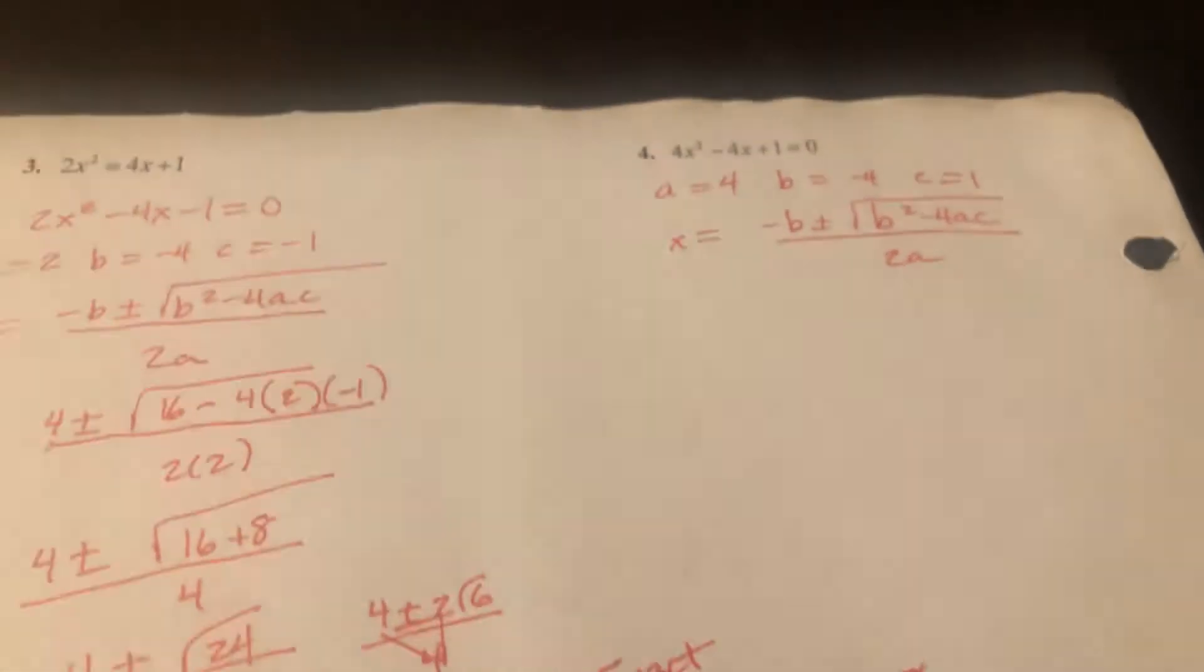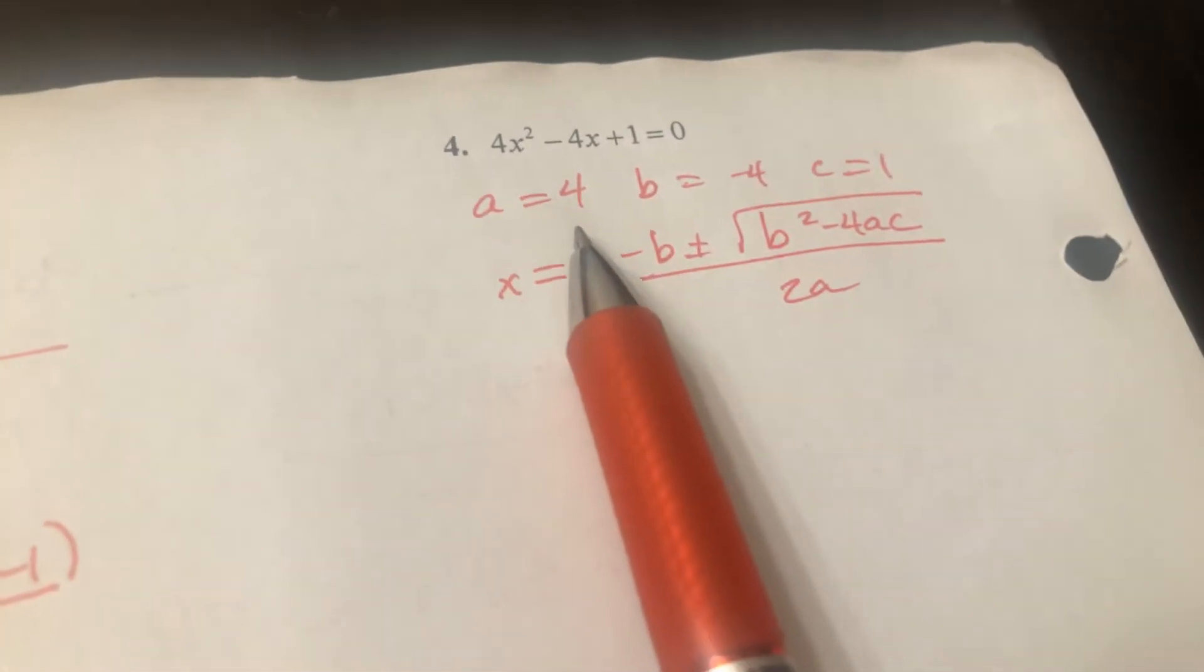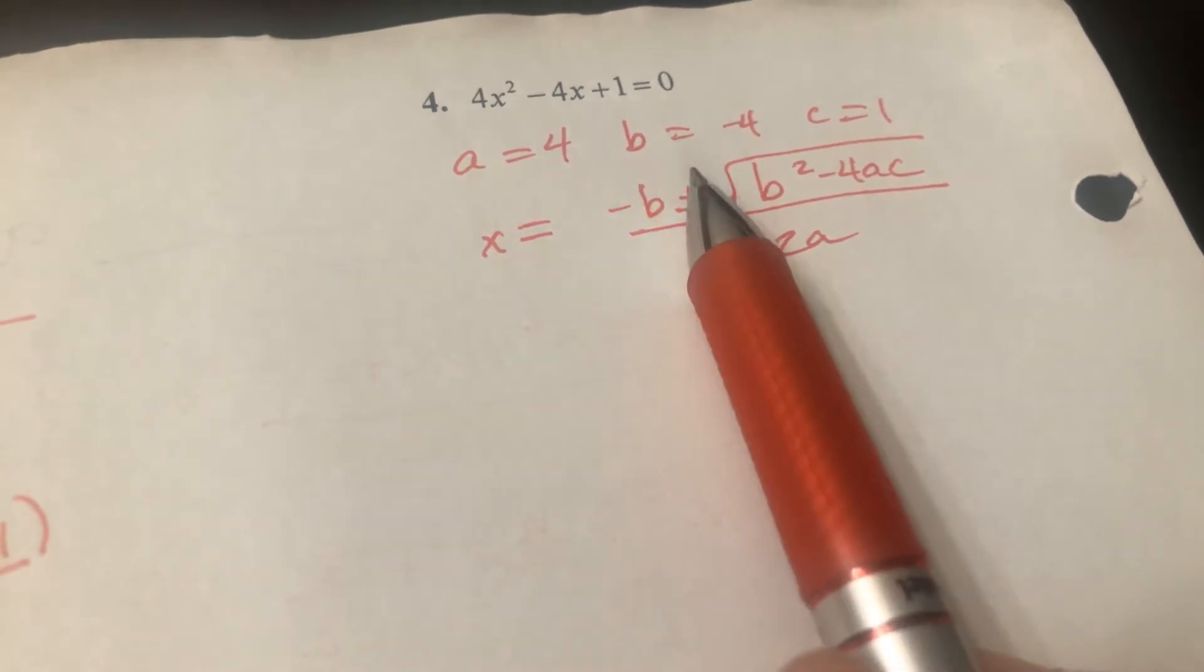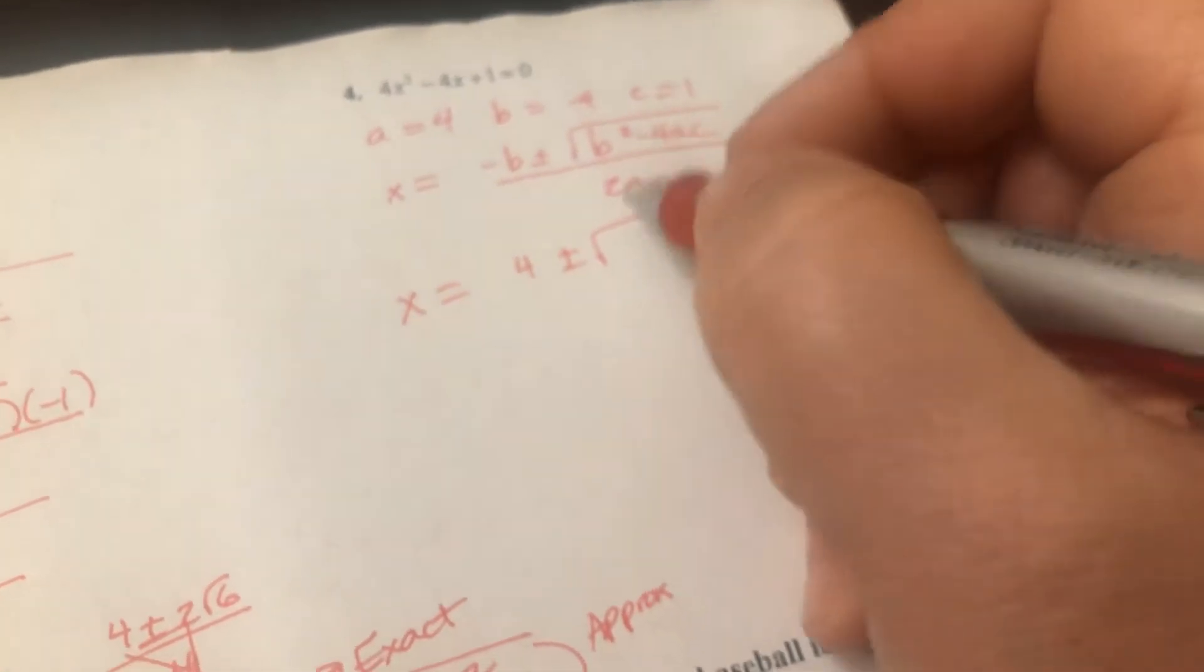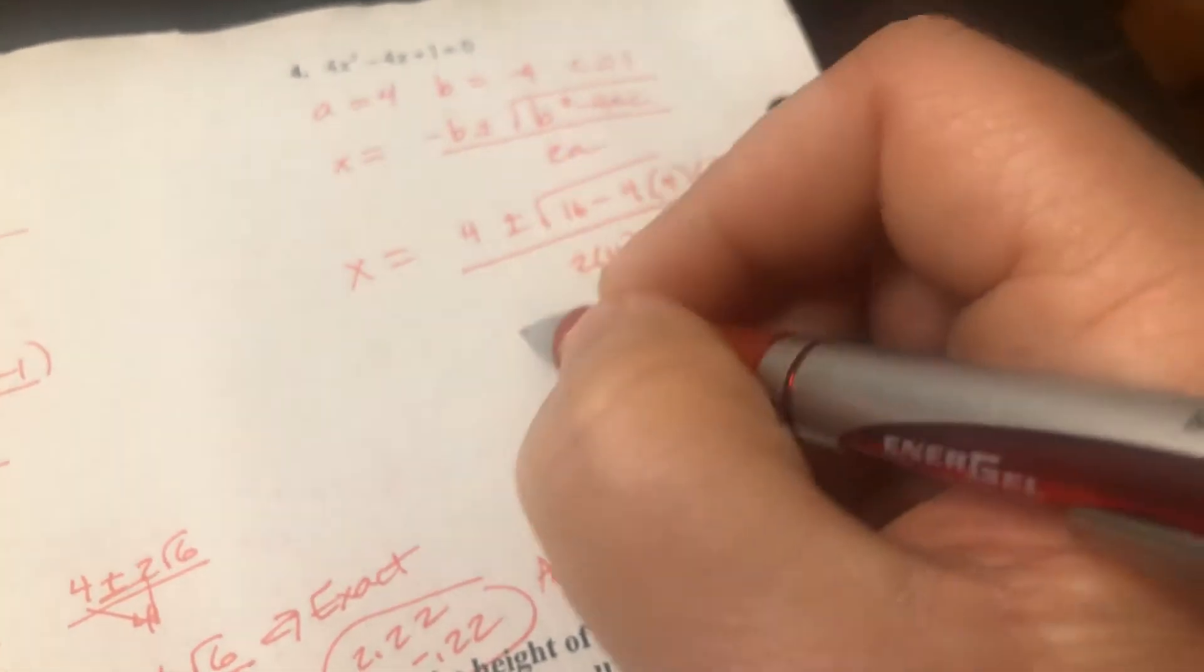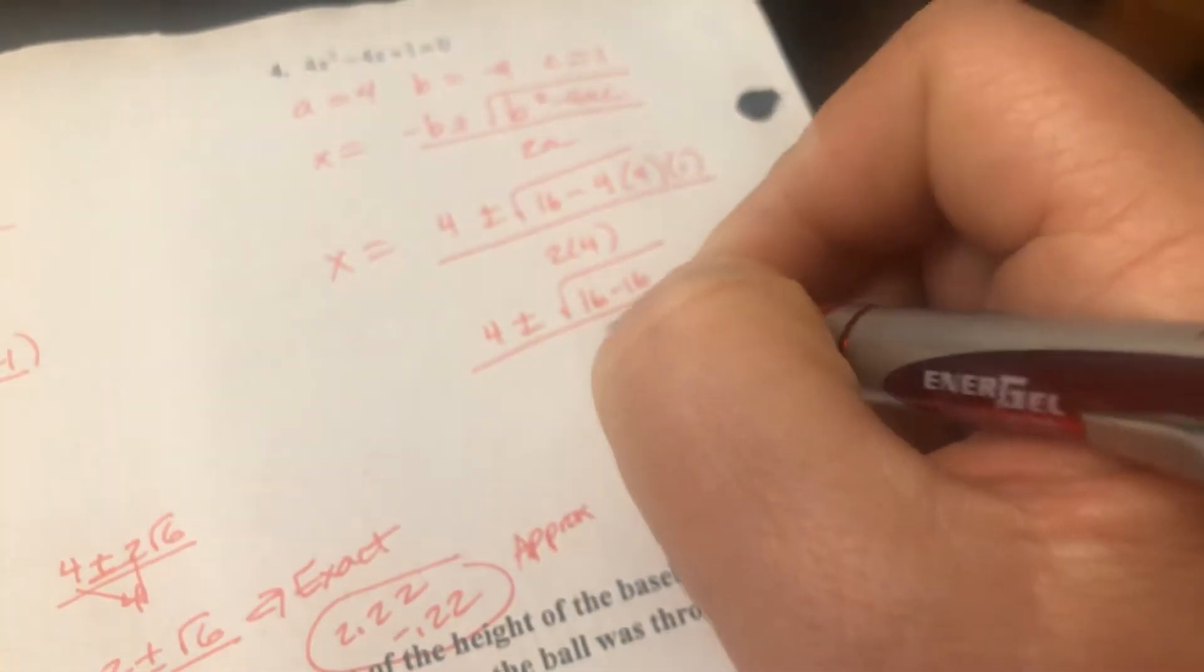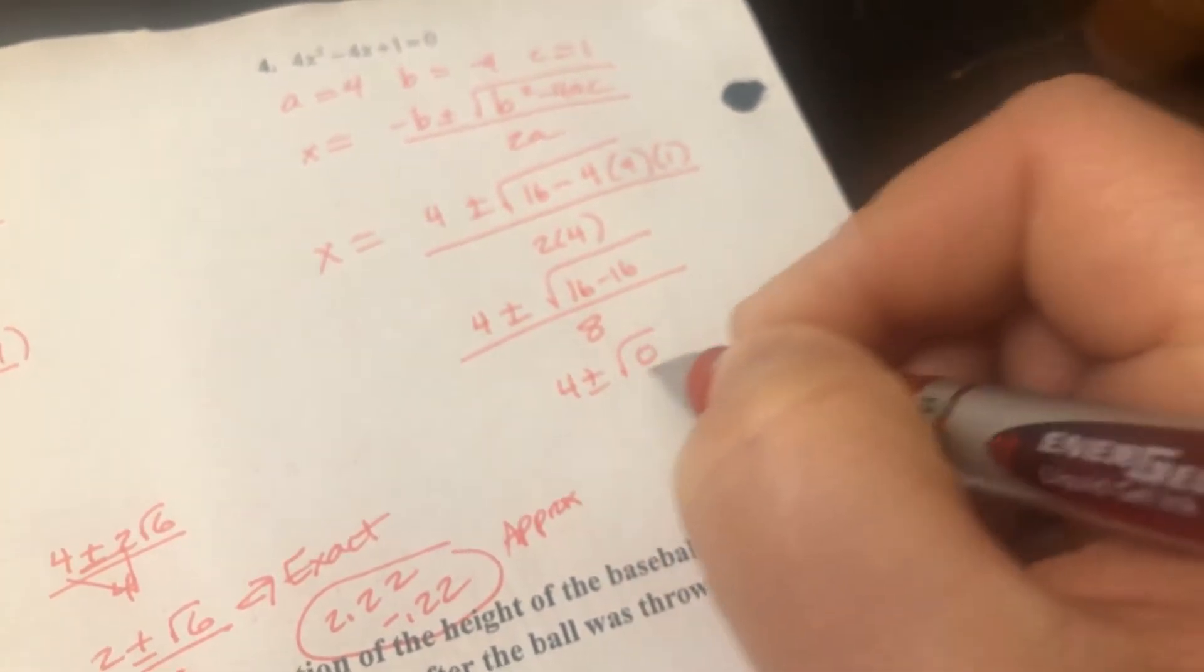All right, so let's work this guy. Something a little unusual is going to happen here. Good news is it's set equal to 0. So A is 4, B is negative 4, C is 1. There's my quadratic formula. So that's going to be 4 plus or minus. So B squared is 16 minus 4 times an A value of 4 times a C value of 1, all over 2 times 4. So that's 4 plus or minus 16 minus 16, all over 8. So that's 4 plus or minus the square root of 0.